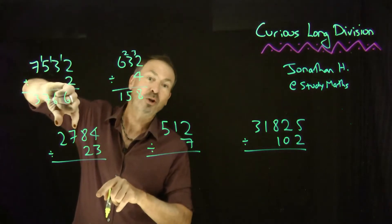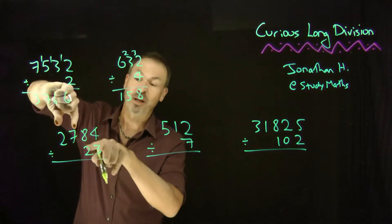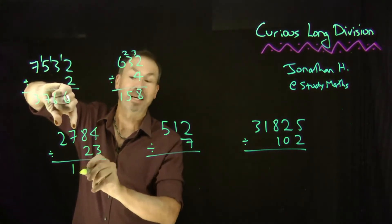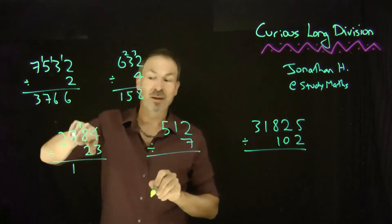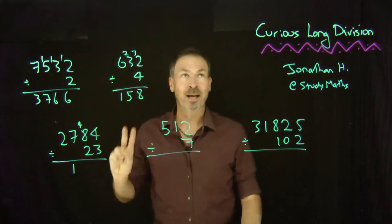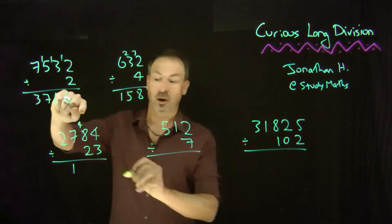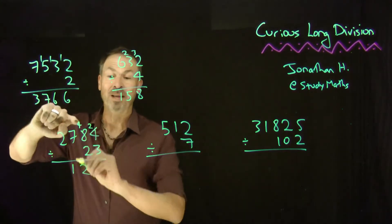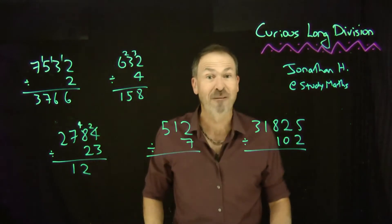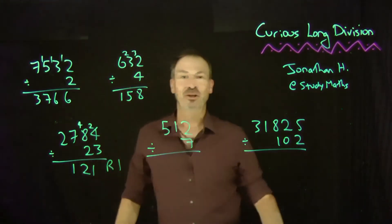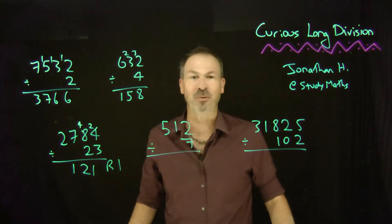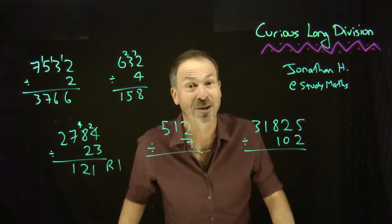Well, it doesn't go into 2, but let's look at 27. How many times does 23 go into 27? It goes once with a remainder of 4. Read that as 48 now. How many times does 23 go into 48? I'm thinking double is 46. It goes in 2 times with a remainder of 2. How many times does 23 go into 24? It goes once and now we have a remainder of 1. 2784 divided by 23 is indeed 121 with a remainder of 1.